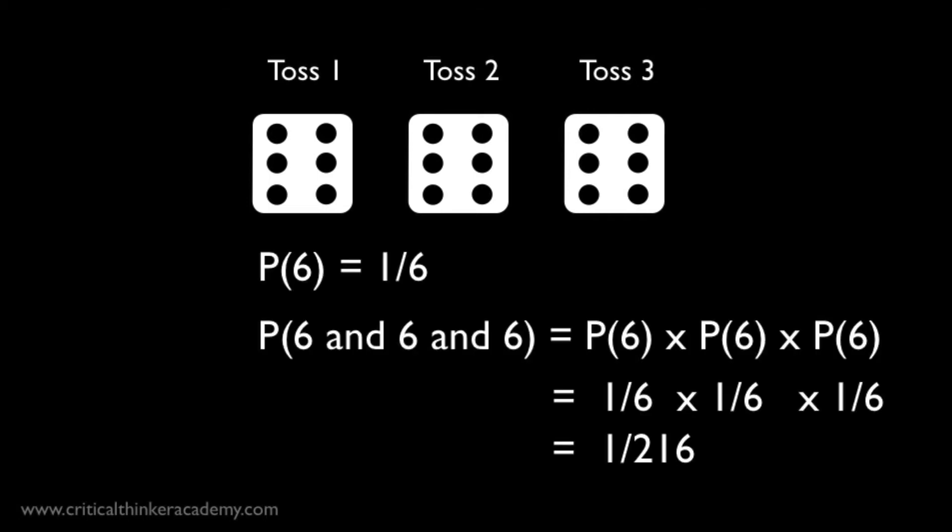The probability of rolling a six is just one in six. So, the probability of rolling three sixes in a row is just one in six times one in six times one in six, which is one in 216.